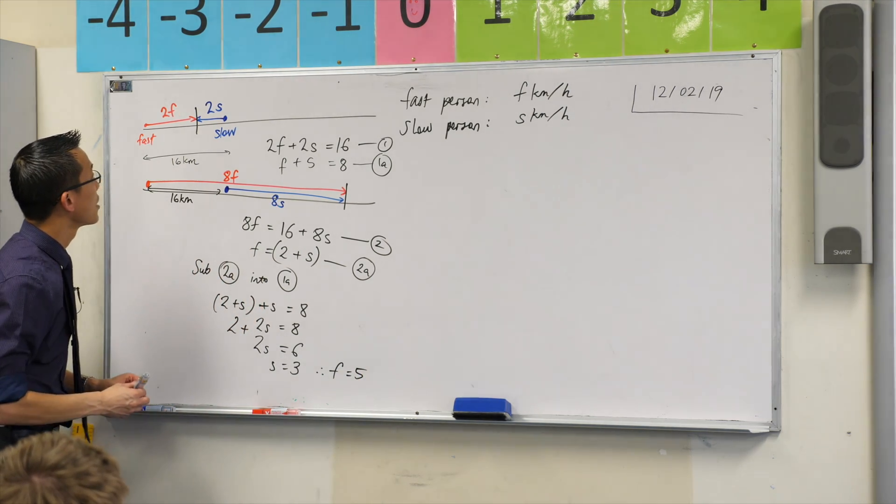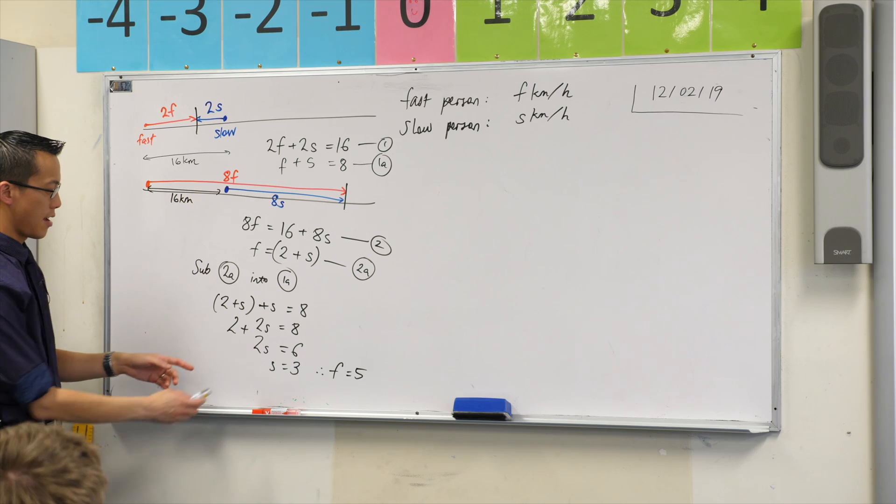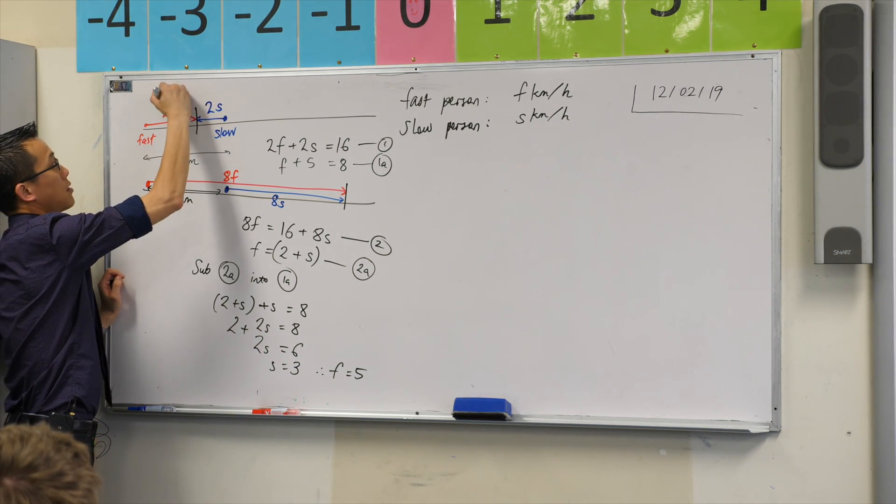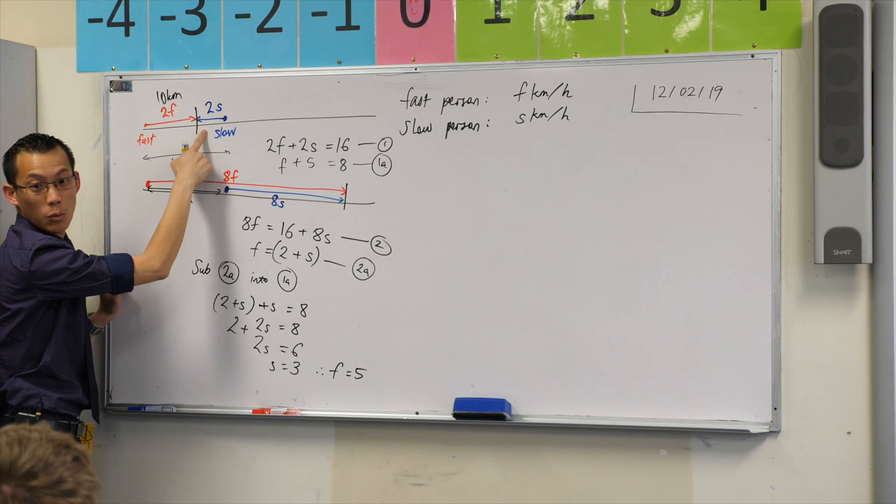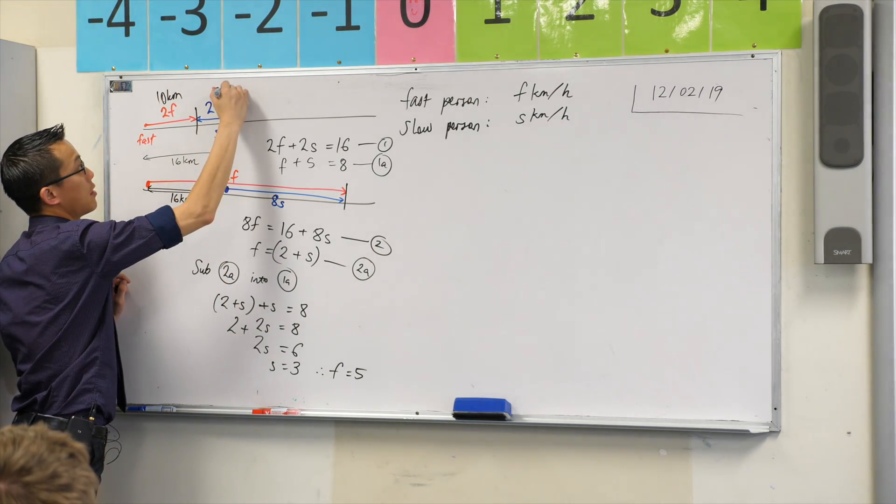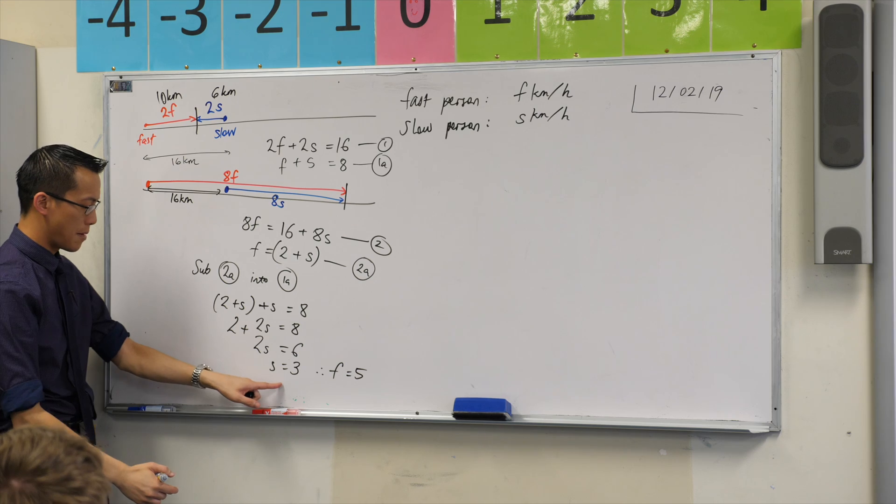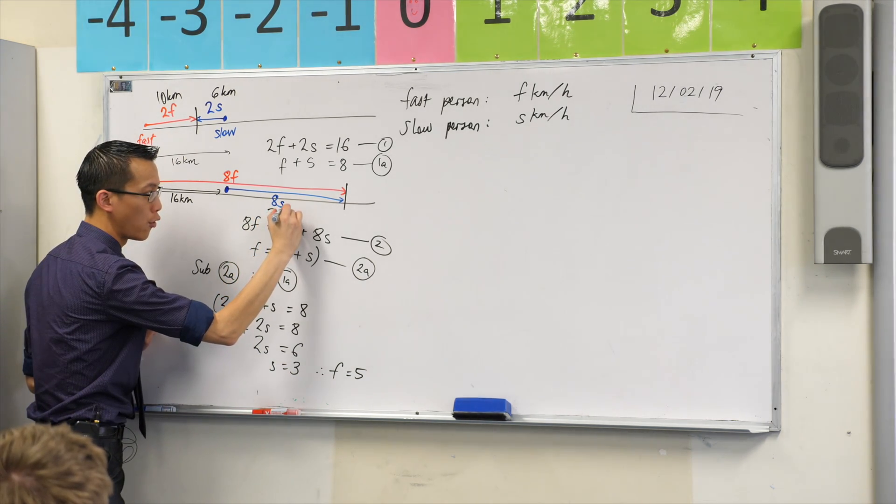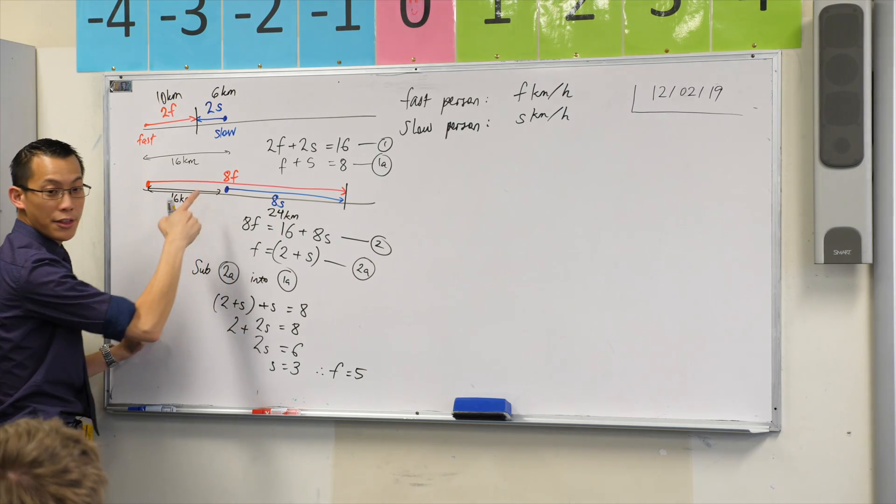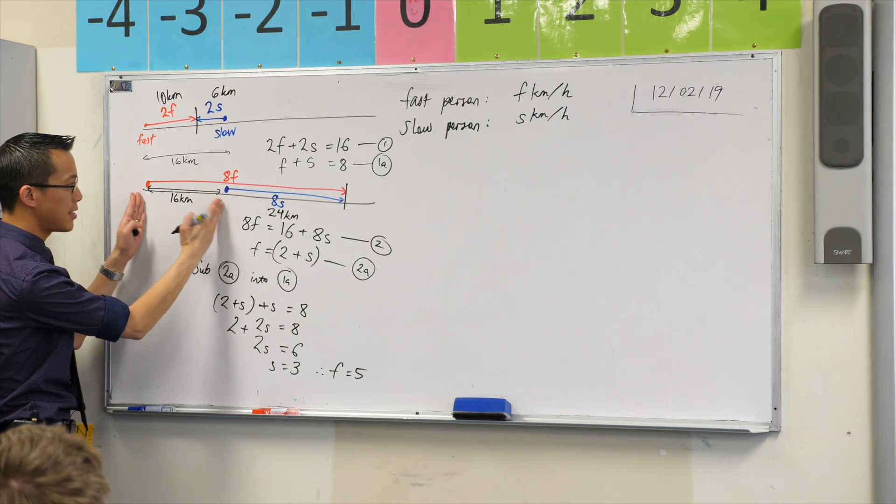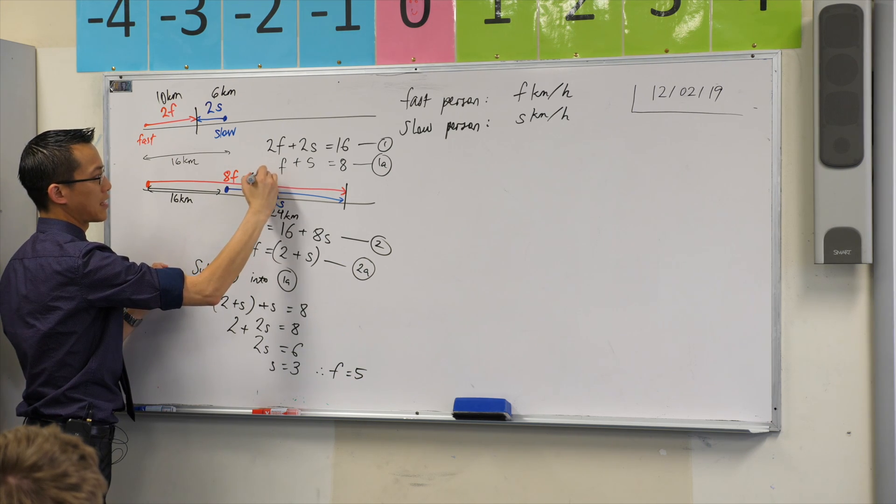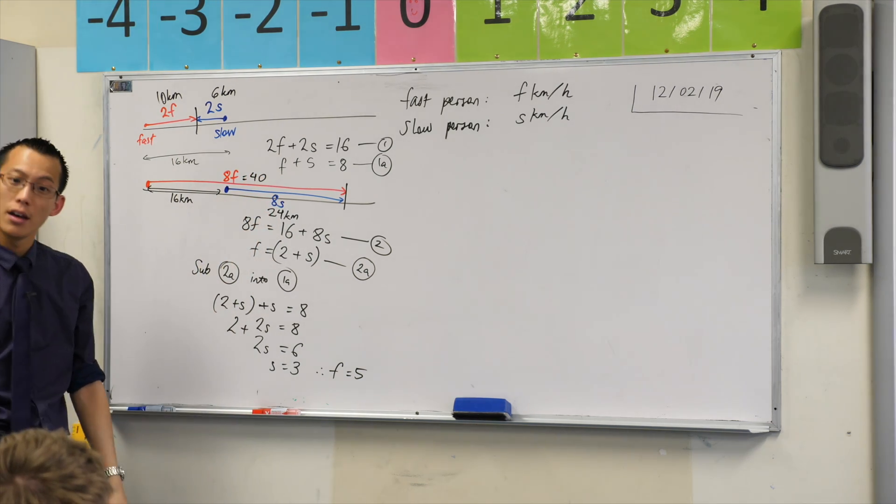And you could check it out. In two hours, how far will the fast person go? According to this, 10 kilometers. And the slow one will go six. And same deal here, eight would mean the slow person would travel 24 kilometers. The fast person has to cover this 16 and the 24, which is eight times five. That's 40. There's the 16 and the 24.